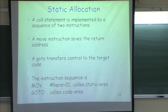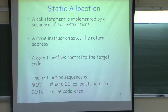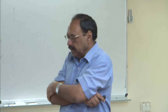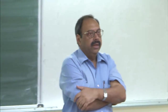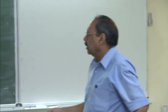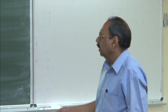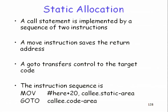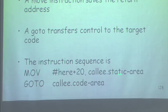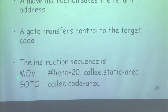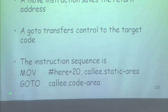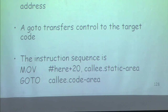The call instruction is a sequence of two instructions. The first moves the current location plus 20 into the call stack area, then jumps to the calling code area. The number 20 comes from assuming each opcode and each address takes 4 bytes. The move instruction takes 1 word for the opcode and 1 word each for the two addresses, plus the jump takes 4 bytes each — totaling 20 bytes, which is the offset to the next instruction.